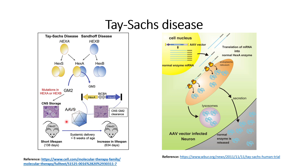This experiment has been done in mice. Mice that do not receive the adeno-associated virus with this plasmid have a short lifespan of 138 days, whereas mice that receive regular or systematic delivery of adeno-associated virus 9 with this plasmid showed an increase in lifespan to 634 days. CNS storage has been shown in the untreated mice.